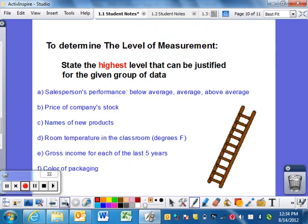Here are six examples. Push pause and do them yourself. Salesperson performance - below average, average, above average - that would be ordinal because you can order them but the math does not matter.